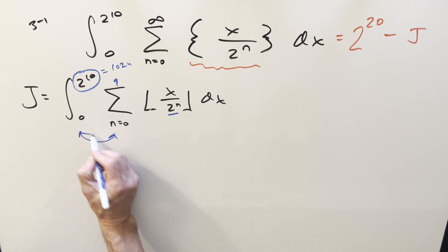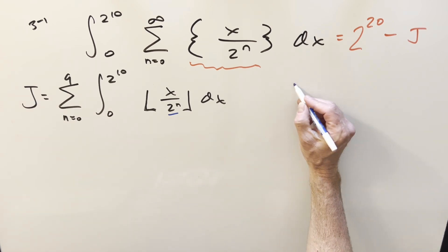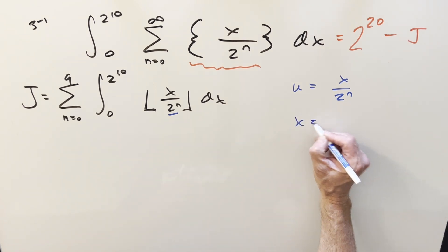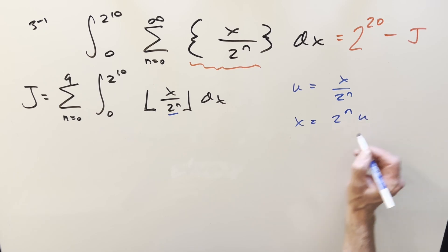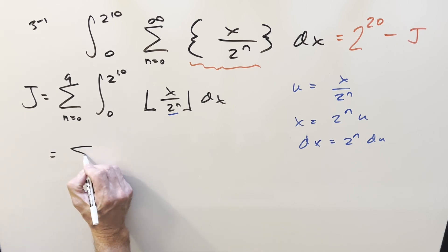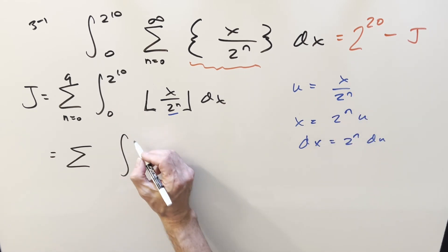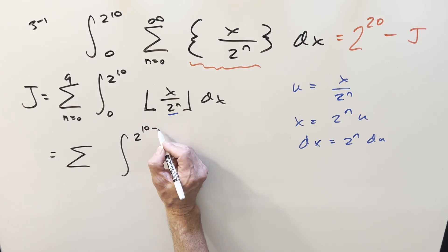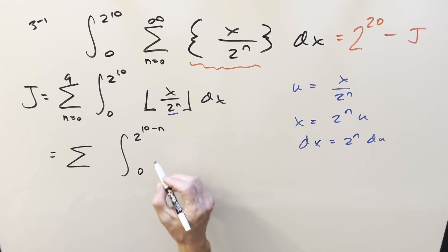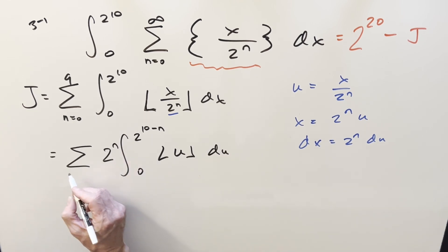Now I want to do a u-substitution to simplify. We substitute u = x over 2^n, so x = 2^n times u and dx = 2^n du. Updating our bounds: the upper bound 2^10 becomes 2^10 over 2^n, which is 2^(10−n), and the lower bound stays 0. The floor of x over 2^n becomes floor of u, and we can bring the 2^n outside the integral as a constant.